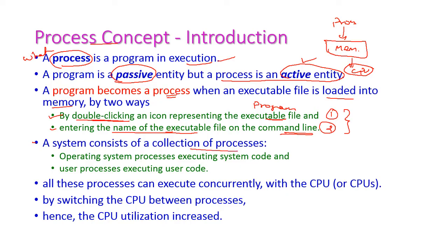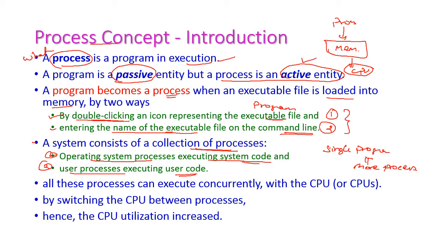The system consists of a collection of processes. A single program may have more than one process. Two types of processes exist: operating system processes, which execute system code, and user processes, which execute user code. All these processes can execute concurrently; the CPU switches between processes, which increases CPU utilization.